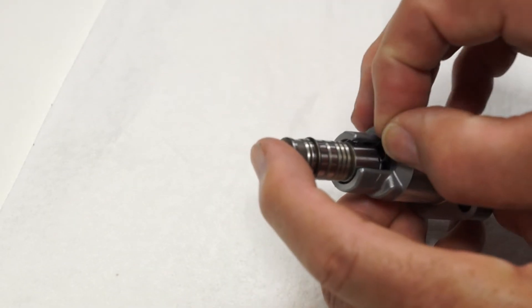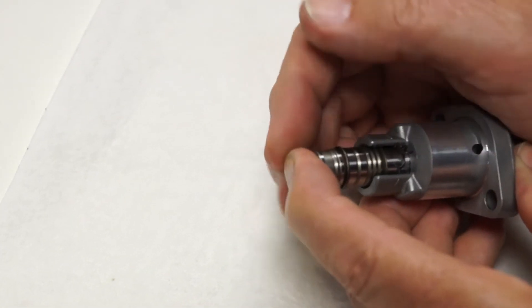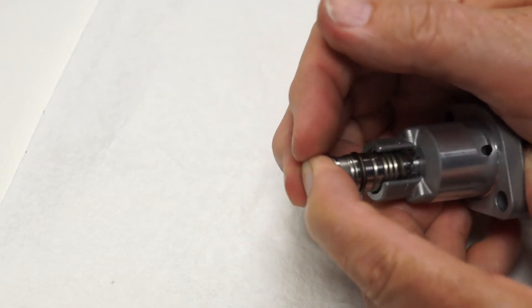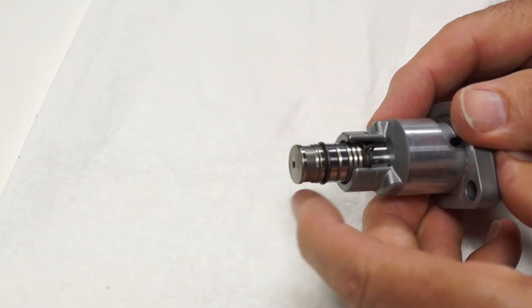Again, be careful as you install the tensioner rod and begin to compress the spring. The rod may spring back quickly and fall loose until it's captured in the housing by the clip.